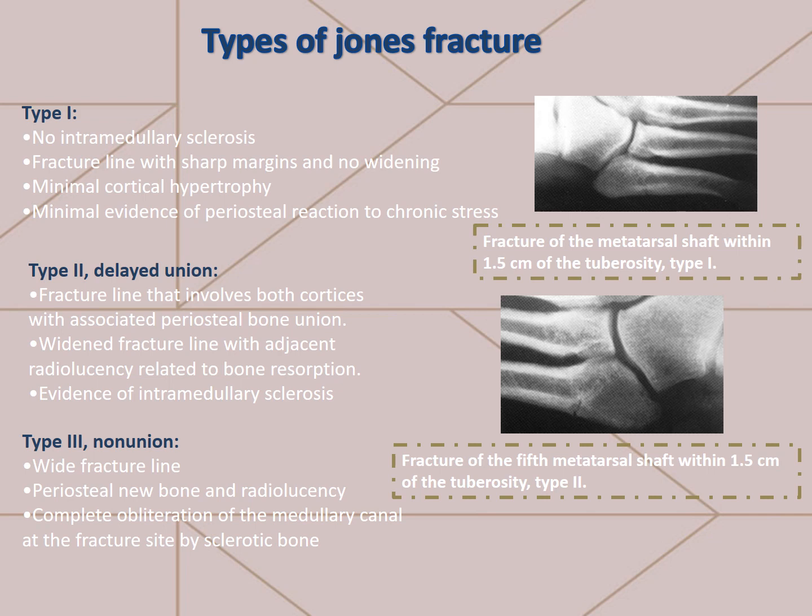Type 3, which is non-union: it's a wide fracture line, periosteal new bone and radiolucency, and complete obliteration of the medullary canal at the fracture site by sclerotic bone.